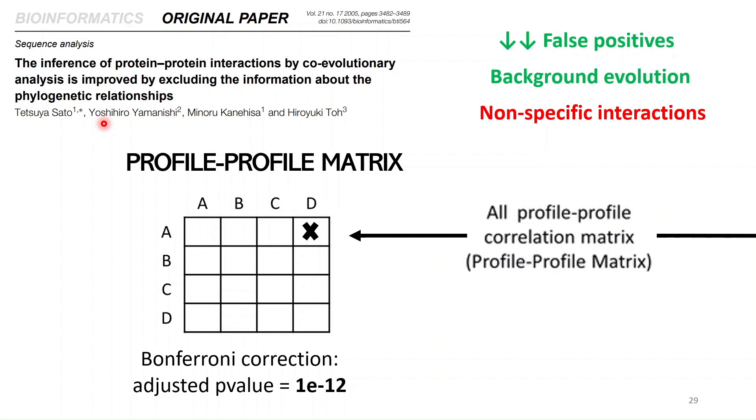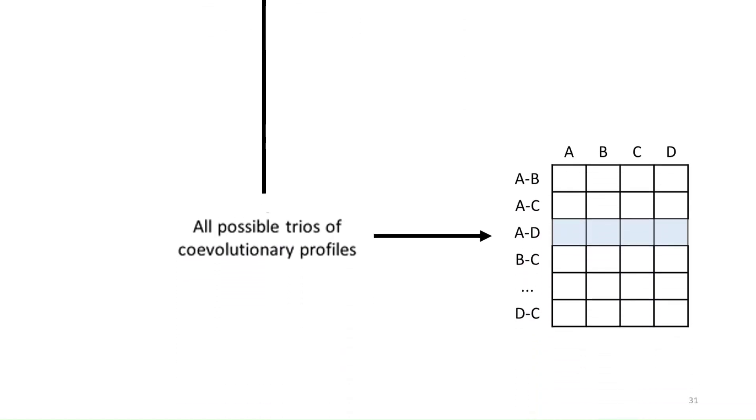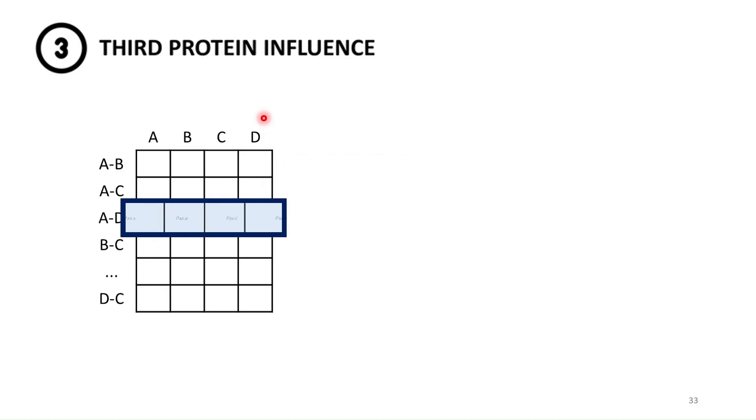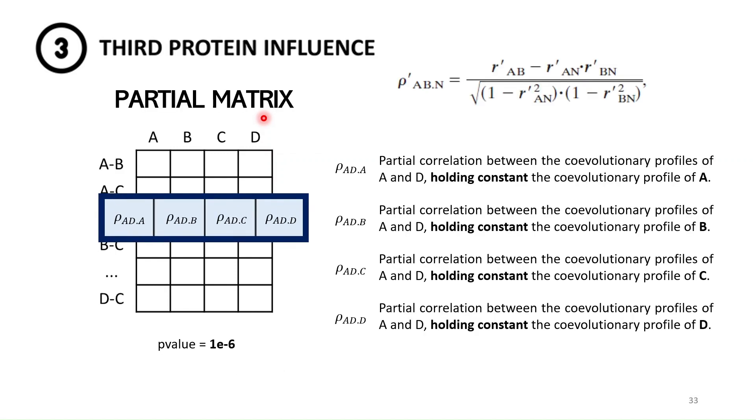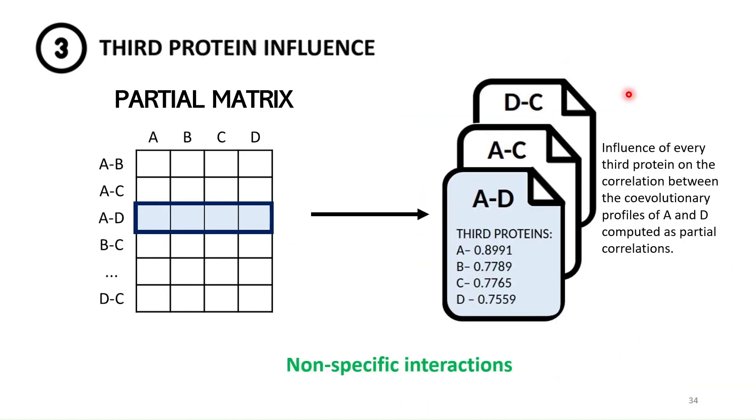This last issue is addressed in the last step which consists of making a matrix in which in the rows we have all possible interactor pairs and in the columns we have all proteins that are present in the proteome because we want to see how much of this interaction is explained by every individual protein. We do this by calculating the partial correlation between each possible instance, and in the end this was proven to correct for non-specific interactions and this provides us with our output, which is for each protein interaction that we predict a number of correlations associated to it.